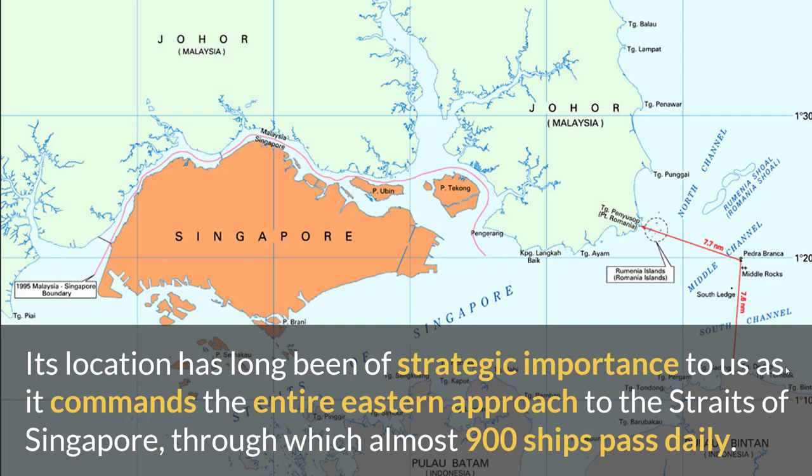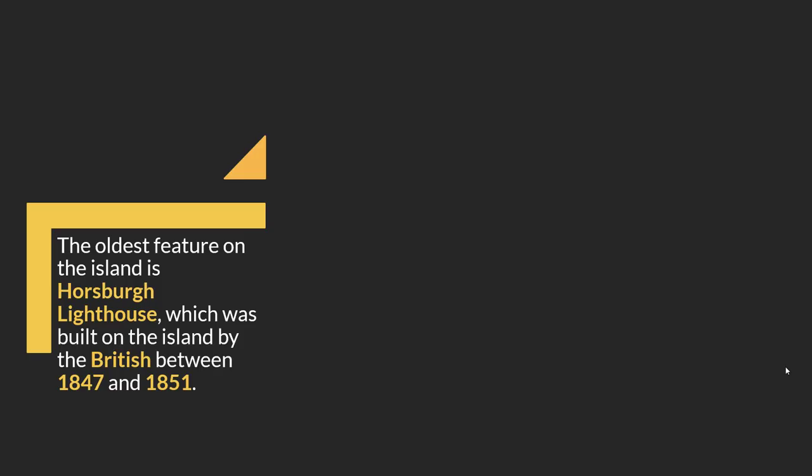Even though Pedra Branca is further away from us, it marks the entrance to the Middle Channel, where ships enter the Port of Singapore. If we lose that territory to another country, we might lose control of the entrance — we could be blocked or have to pay taxes, because it would no longer be part of our land. Owning Pedra Branca and the Middle Rocks also means that the surrounding sea area belongs to Singapore.